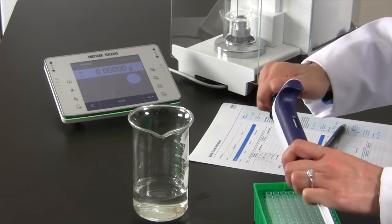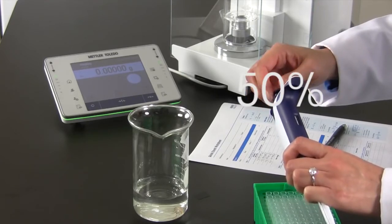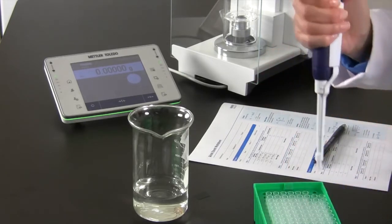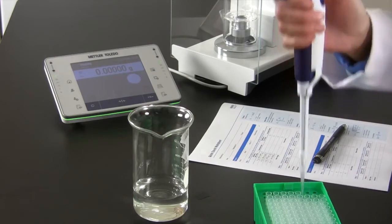Next, adjust the pipette down to 50% of its nominal volume. Pre-rinse a new tip three times, and take and record four more weighings.